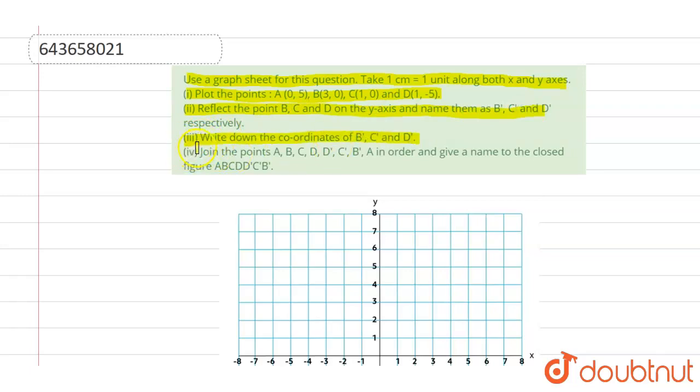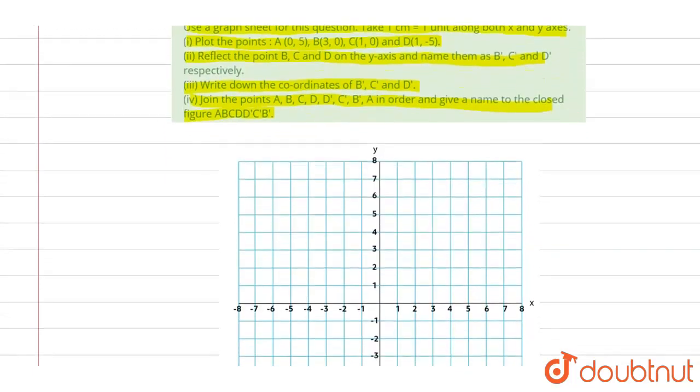Then join the points A, B, C, D, D', C', B' and A so that we get a closed figure. Okay, let's go step by step and start by plotting these points.